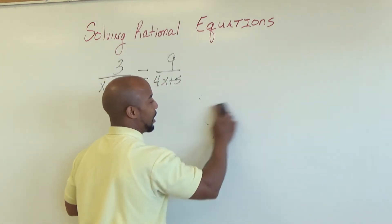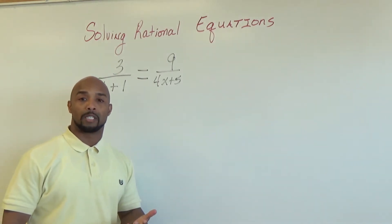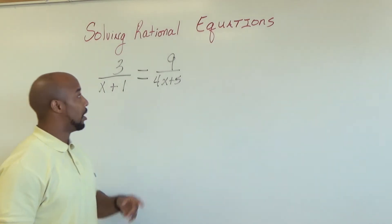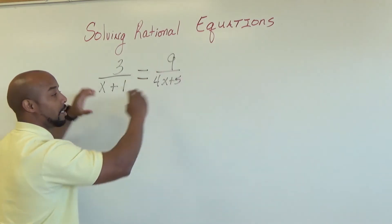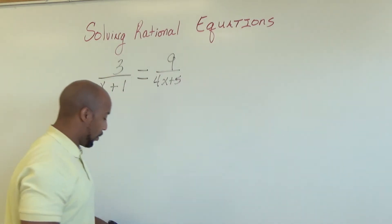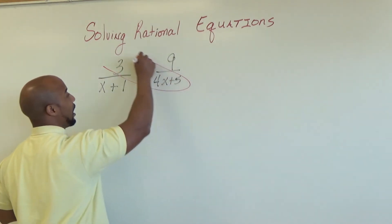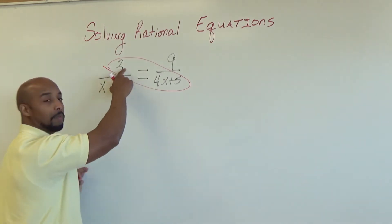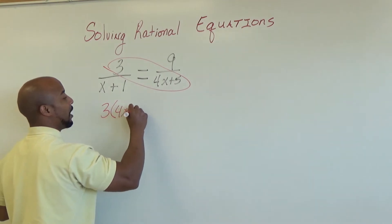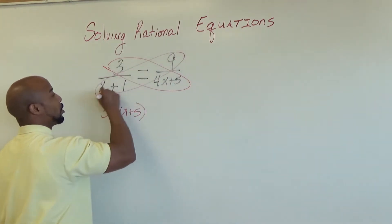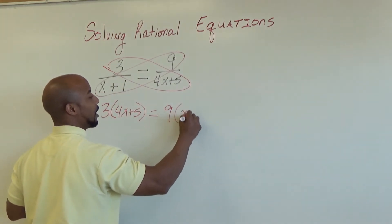So why did I bring that back up? Because here what we have are two rational expressions that are set equal to each other. Notice we have a quotient, a quotient, with an equal sign — together it makes a proportion, and we can solve this proportion by cross multiplication. We can multiply 3 times 4x plus 5. That means we must distribute 3 times (4x + 5) and set it equal to 9 times (x + 1).